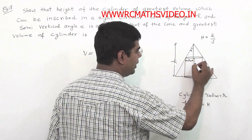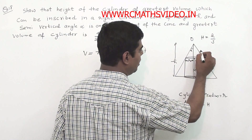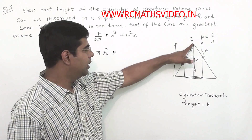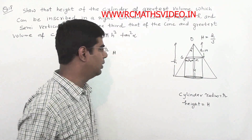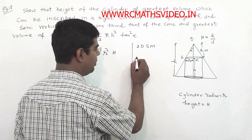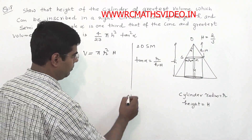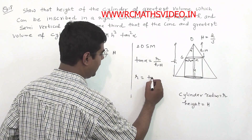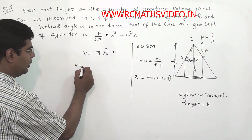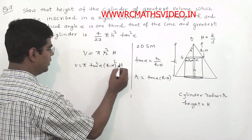If the total cone height is h, then the distance OM equals h minus H. In triangle OSM, using tan(alpha) = r / (h − H), we get r = tan(alpha) × (h − H). So the volume expression becomes V = π tan²(alpha) × (h − H)² × H.